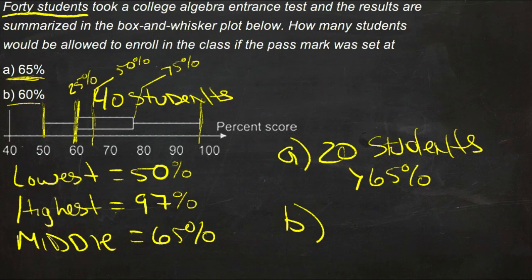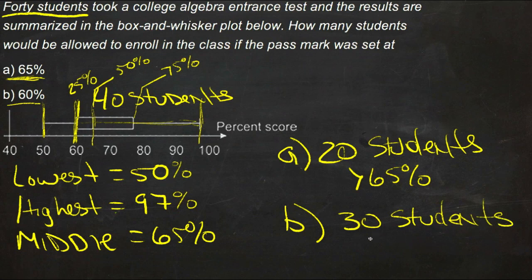Well, if we're a quarter of the way through 40 students, then there must be three-quarters of the students above this mark. So we have a total of 30 students that are above 60%.